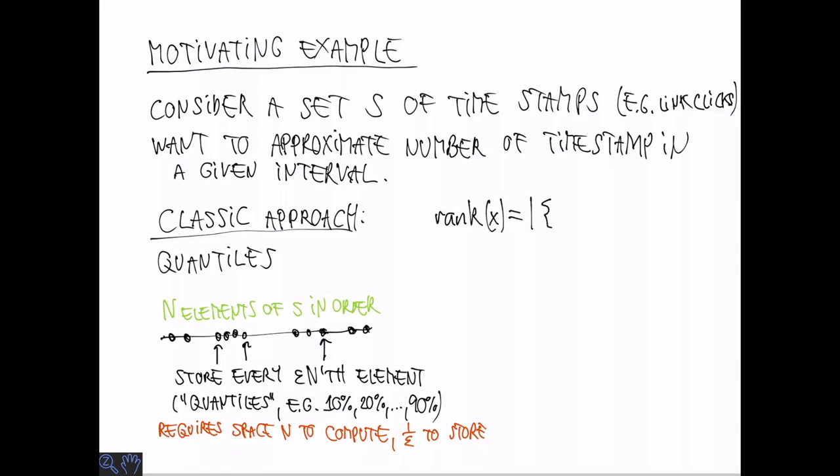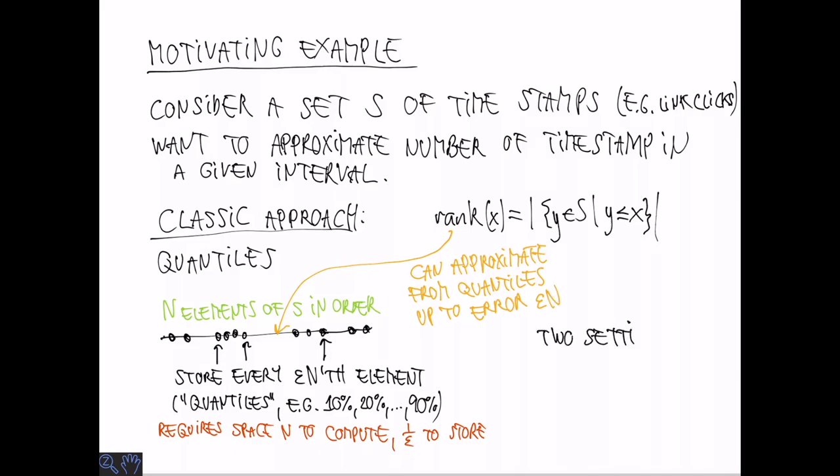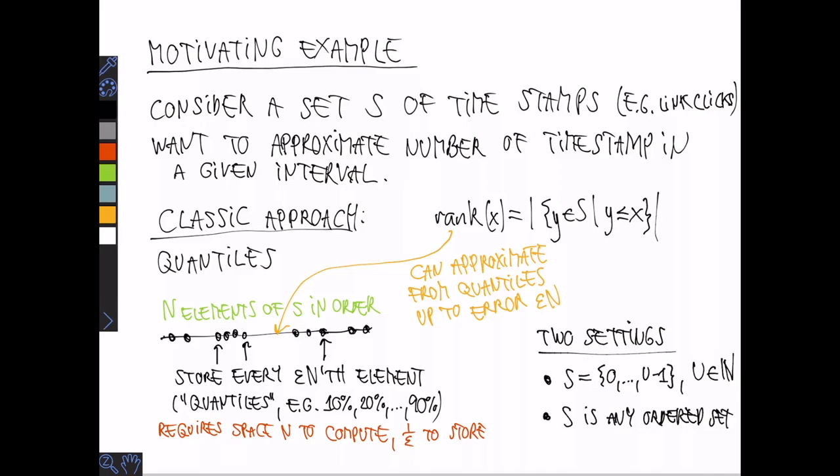Now consider the rank X of an arbitrary element in the domain X, which is defined as the number of elements in the set less than or equal to X. We can approximate the rank from the quantiles with an additive error of at most epsilon N. We want to achieve something similar while using space close to 1 over epsilon. There are two settings to consider. One is where S is a subset of a fixed domain, say 0 to U-1. And the other one, S, can come from any ordered set. So we'll consider the former first and the latter in the last part of the lecture.